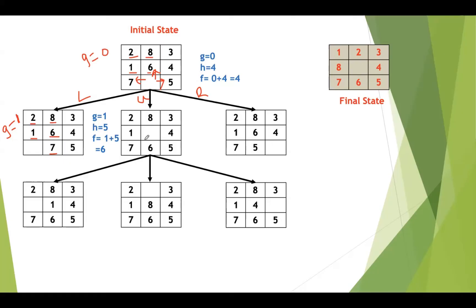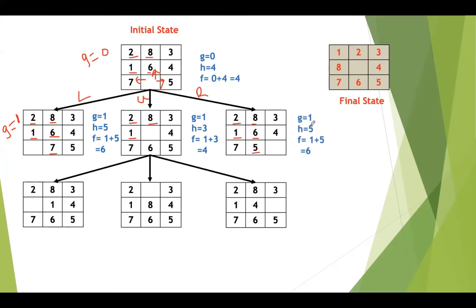For the second successor (up move), g is 1 again. Finding misplaced tiles: 2 misplaced, 8 misplaced, 3 in right position, 1 misplaced, and 4, 7, 6 misplaced, 5 in right position. So here g=1, h=3, f=4. For the third successor (right move): 2 misplaced, 8 misplaced, 3 in right position, 1 misplaced, 6 misplaced, 4 right position, 7 right position, 5 misplaced. So h=5, and g=1, h=5, f=6.